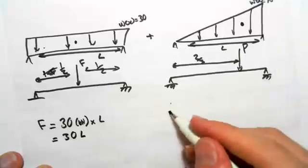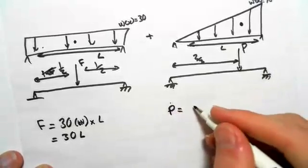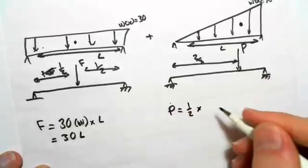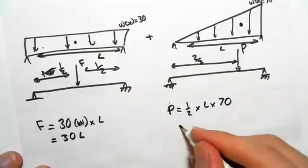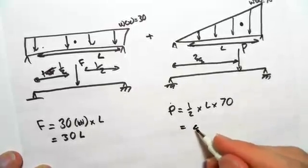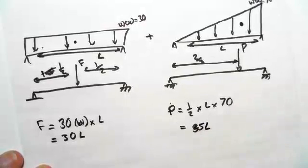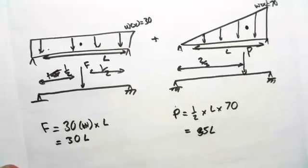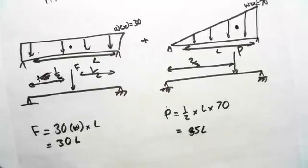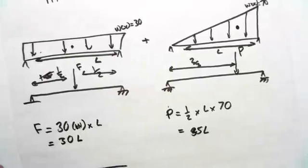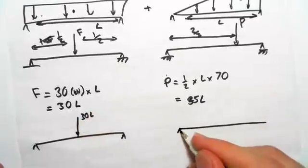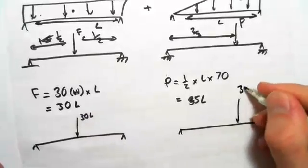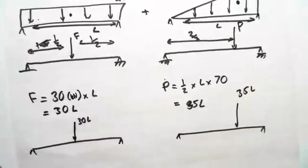For this one, we have P equals half times length times height. So we get 40, sorry, 35L. Okay. So now that we have this, we can put this all together. So this one is 30L. This one is 35L.